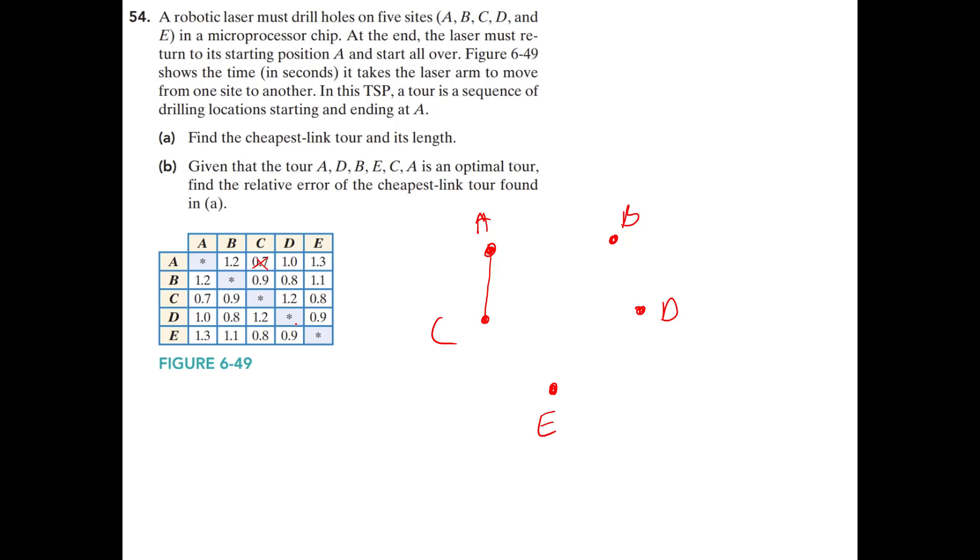So that corresponds to the edge from A to C. Next cheapest one is we have a couple 0.8. So you can pick either one of those and I will use this one that goes from B to D. And there's this other 0.8 here. And now we have to be careful. Can I use that one? That one goes from C to E. And that's perfectly fine.